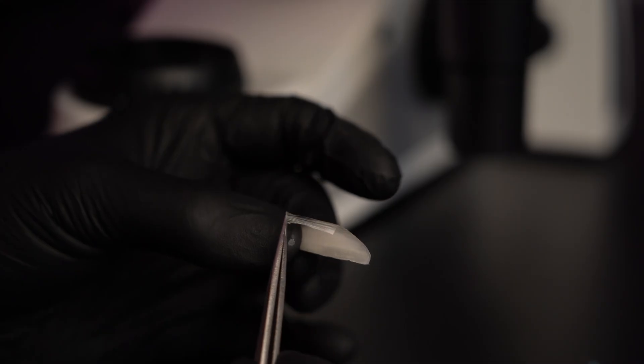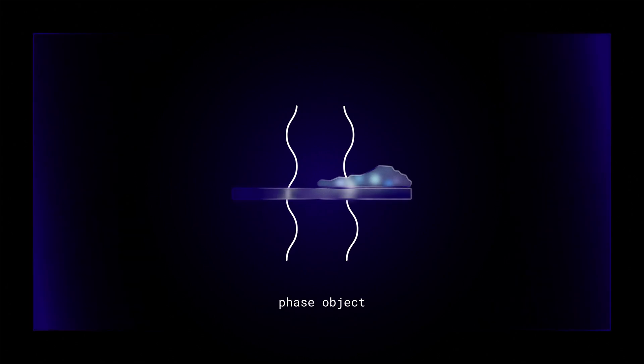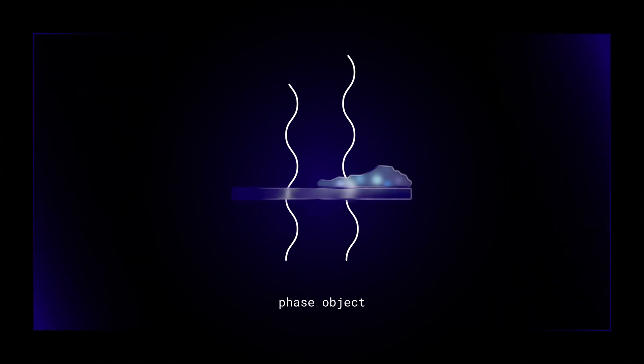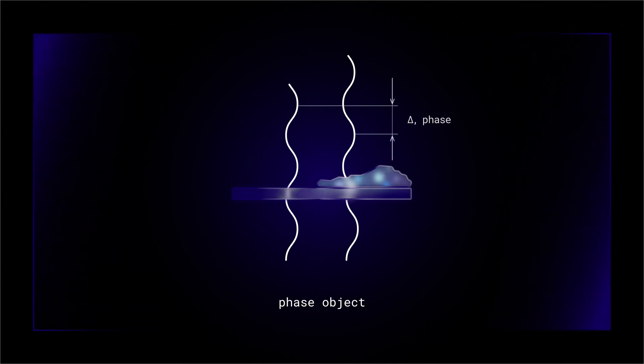Unstained specimens that do not absorb light are called phase objects because they slightly affect the phase of the light diffracted by the specimen, usually by retarding such light approximately quarter wavelength as compared to the undeviated direct light passing through or around the specimen unaffected.